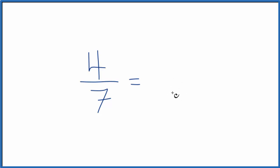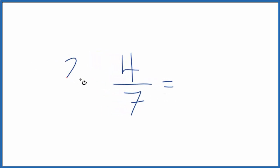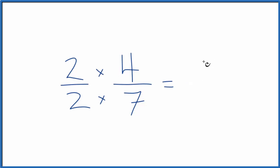So we could multiply four-sevenths by one, and that would give us the same value. But instead of one, let's multiply by two over two — because two divided by two is one, so we're not changing the value. Now we have two times four, that gives us eight. Two times seven, that's fourteen. And we have an equivalent fraction for four-sevenths: that's eight-fourteenths.